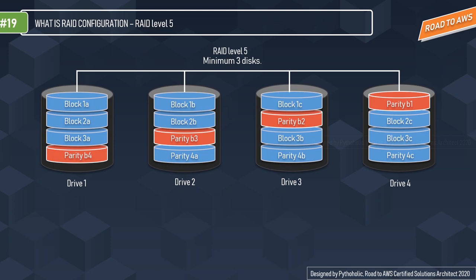RAID 5 is one of the more secure RAID configurations, requiring at least three drives and supporting up to 16. Data is divided across the drives, and on one drive a parity checksum of all block data is written — you can see the red parity block distributed across the drives. In case of data loss, the system recalculates the missing data block using the parity data from all remaining drives.